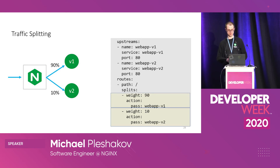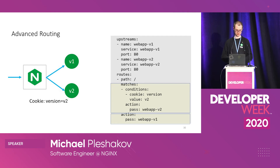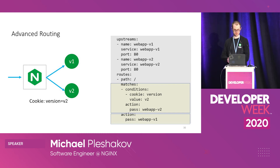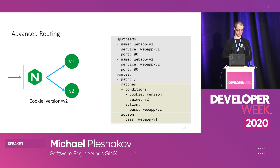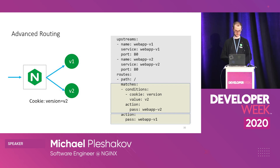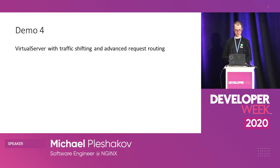Another feature is advanced routing. What if you want to route requests that have the cookie version=v2 to version two of your service, but all other requests without this cookie to version one? This is possible using routing rules in the VirtualServer. You define a matches block with conditions: evaluate the cookie version and check if the value is v2. If the condition succeeds, the request is routed to version two of the service; by default it's routed to version one.